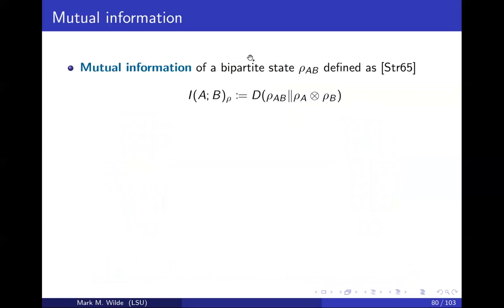A measure of correlations for a bipartite quantum state is the mutual information. Mutual information classically goes back to Claude Shannon in 1948. In the quantum case, it can be traced to someone named Stratanovich in 1965.